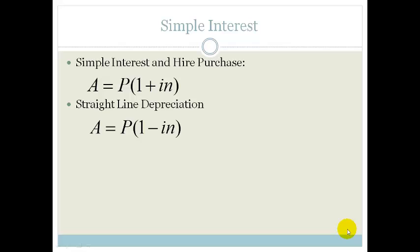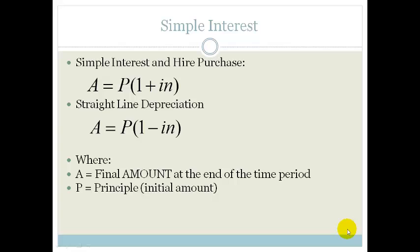So, the amount is getting smaller and smaller. What do these letters mean? A stands for the final amount at the end of the time period. P is your principal, that's your initial amount that you invest. I is your rate of interest or depreciation. Remember, that's always in the form of a decimal. And N is your number of years.